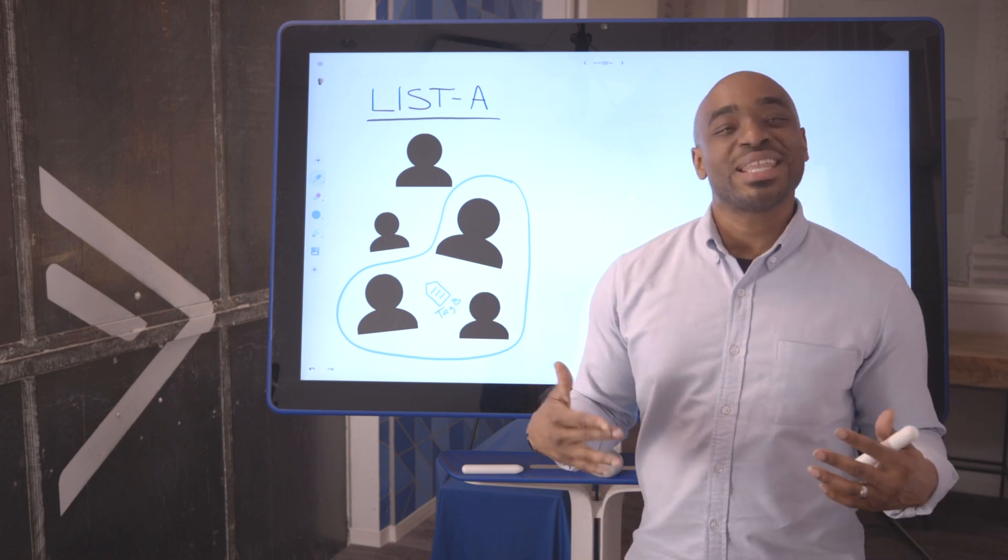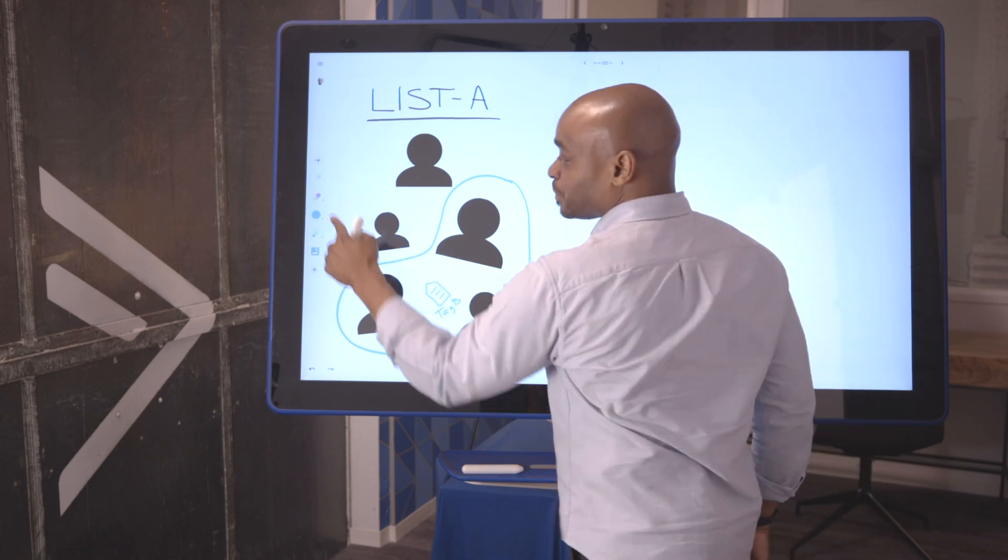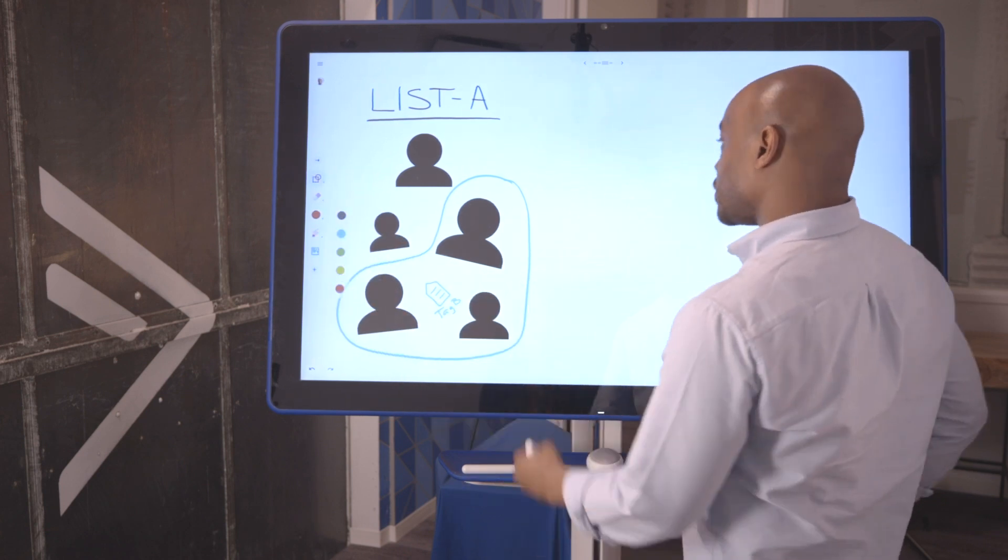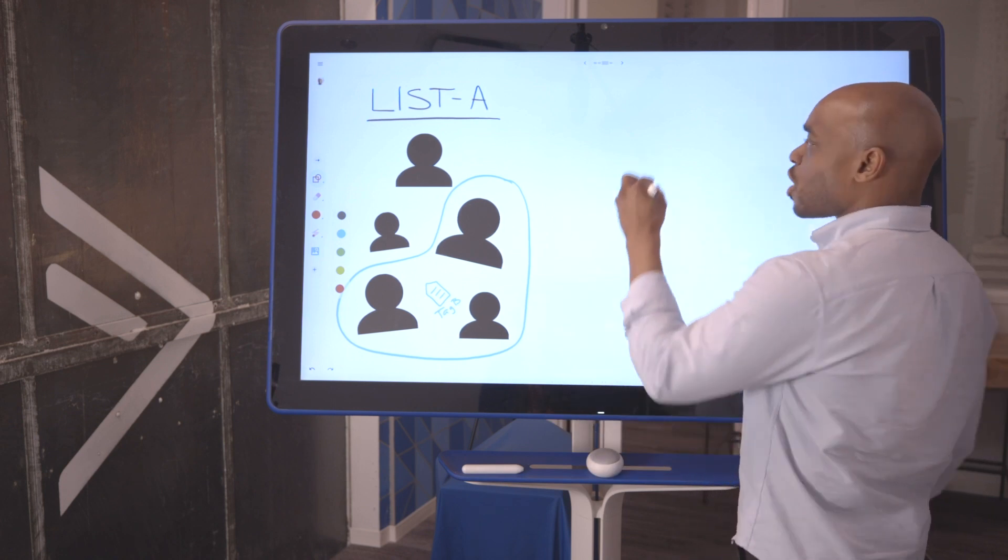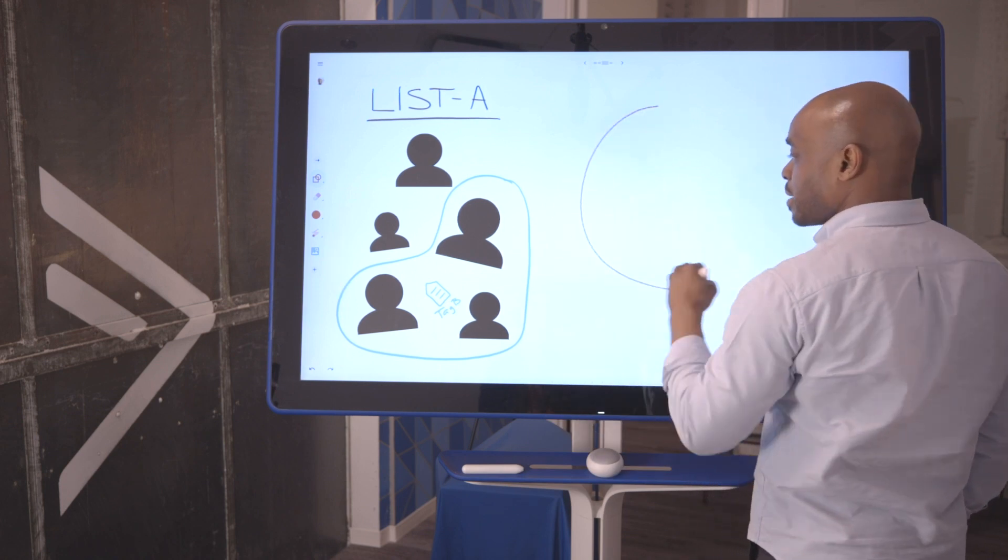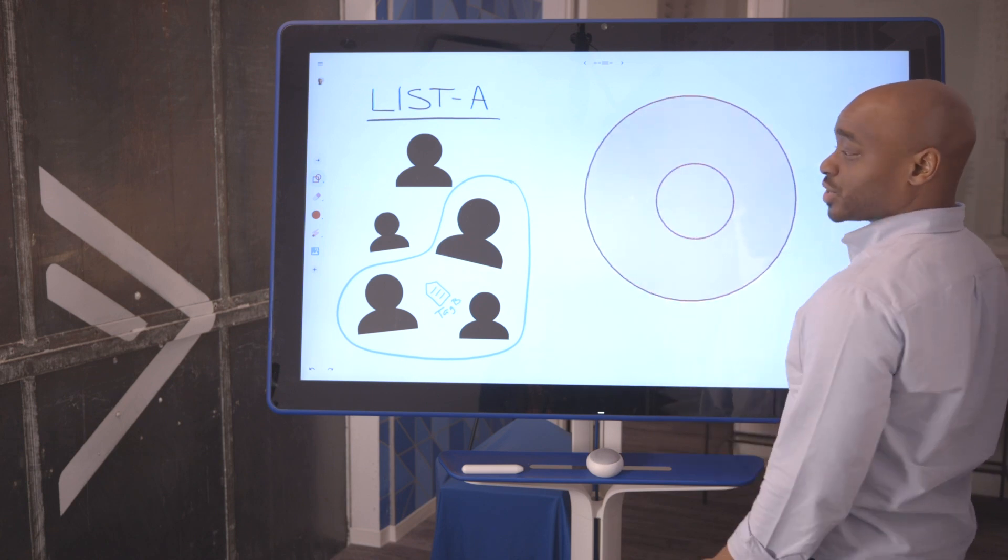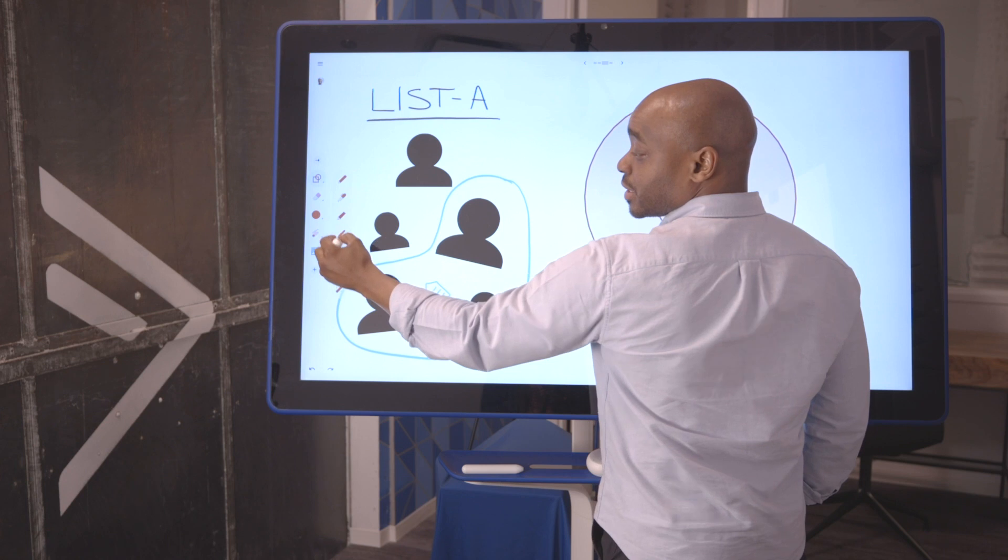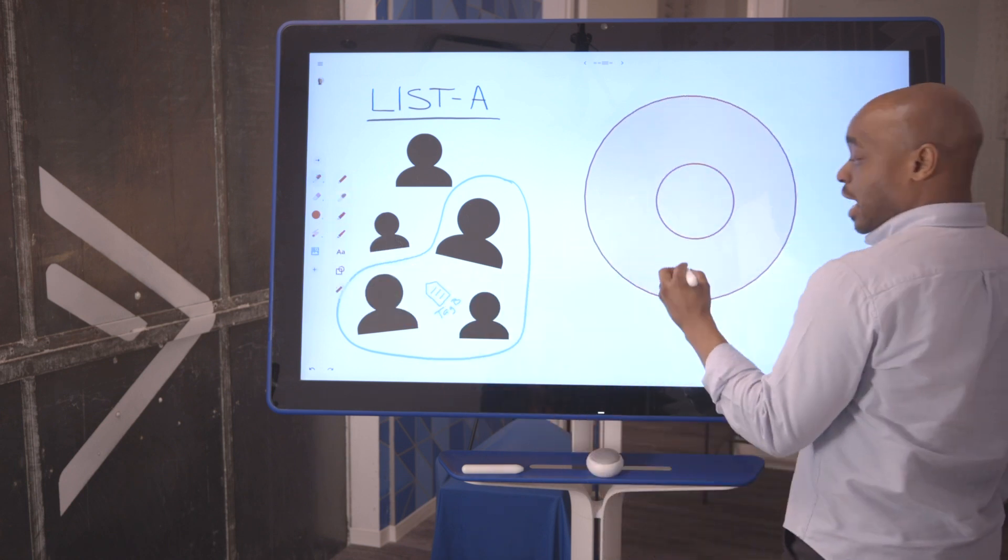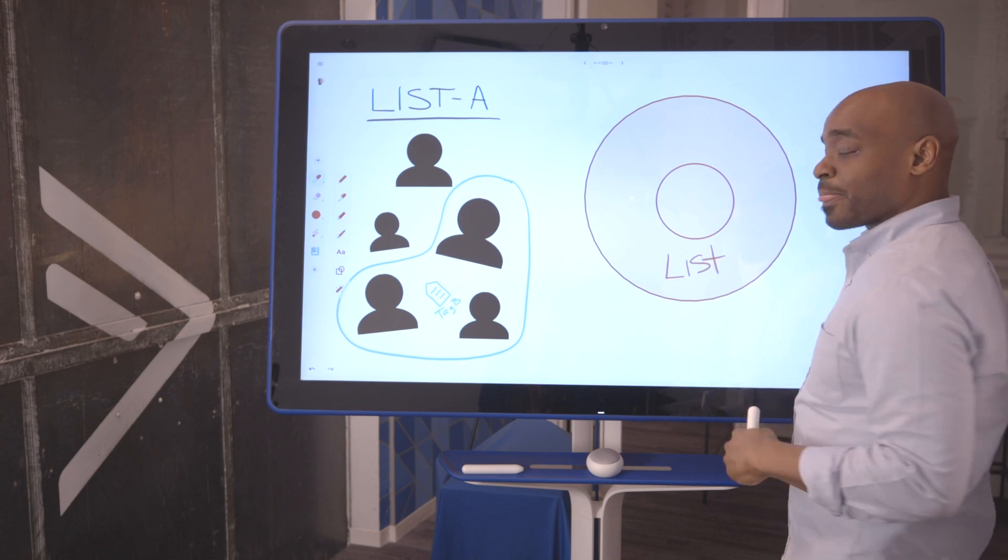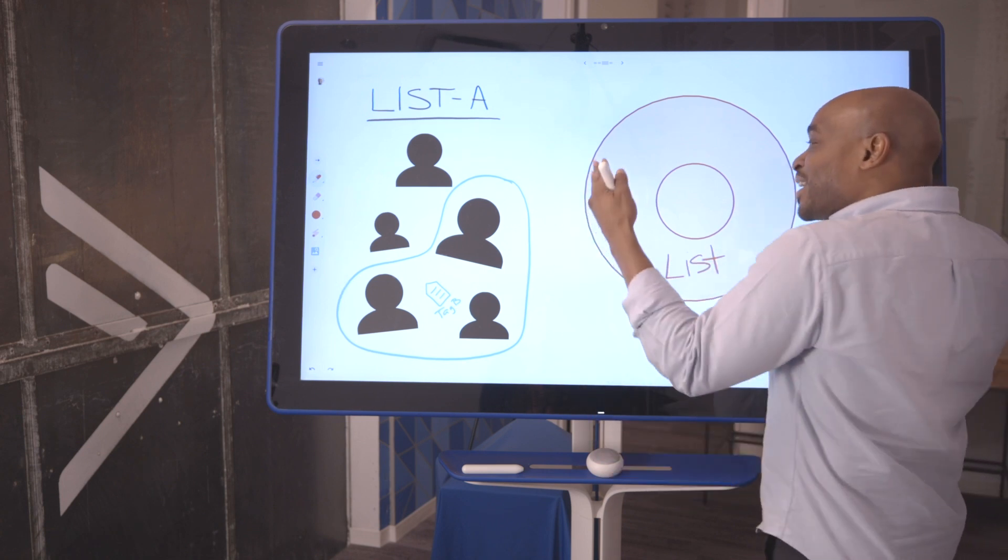Now, what does that look like? Here's what it looks like. With traditional email marketing, we're going to use a target analogy here. We've got our target and we've got our bullseye. What traditional email marketing will allow us to do by sending to lists is we can get on the target, but not in the bullseye.